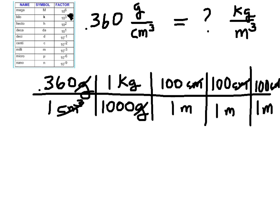So I'm left with kilograms in the numerator and a meter times a meter times a meter in the denominator, which equals meters cubed. When I do the math — 0.36 times 100 times 100 times 100, divided by 1,000 — I get 360 kilograms per meter cubed.